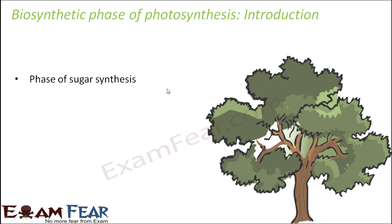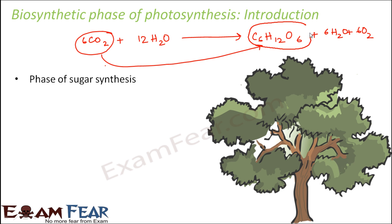Now let us quickly recall the overall equation of photosynthesis. It was something like this: CO2 plus H2O gives C6H12O6 plus H2O plus O2. So now here in this process we will see how carbon dioxide gets reduced to form glucose. So that is our agenda here. We will see this part.